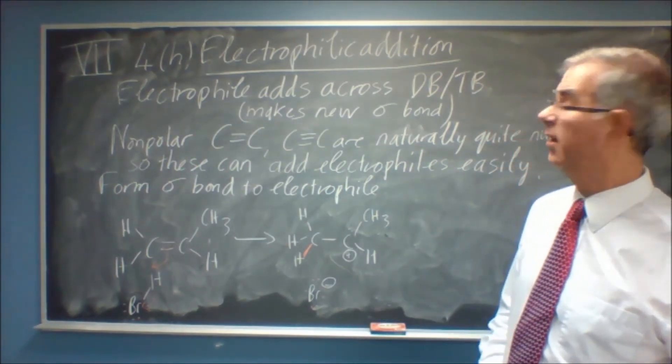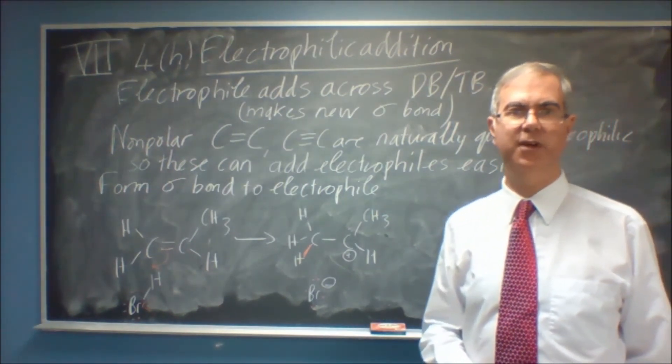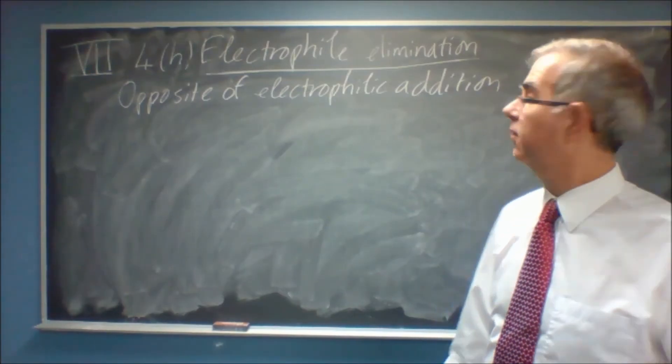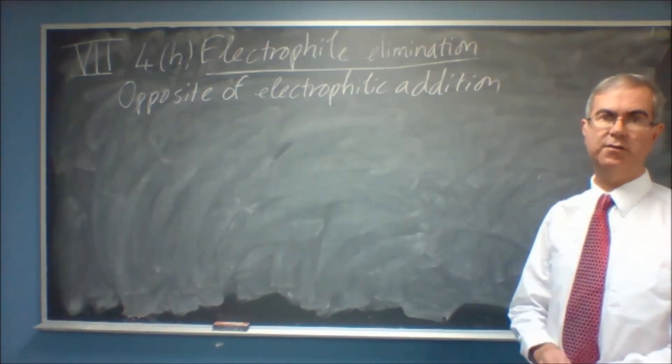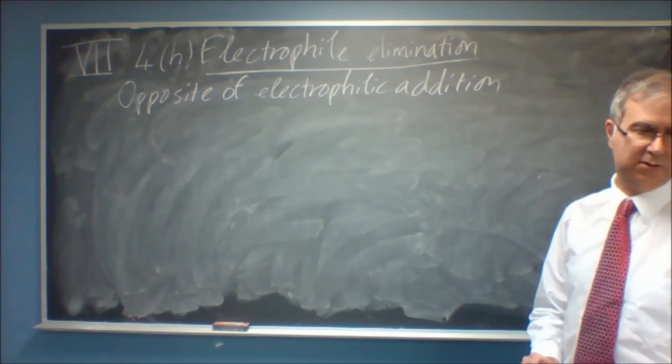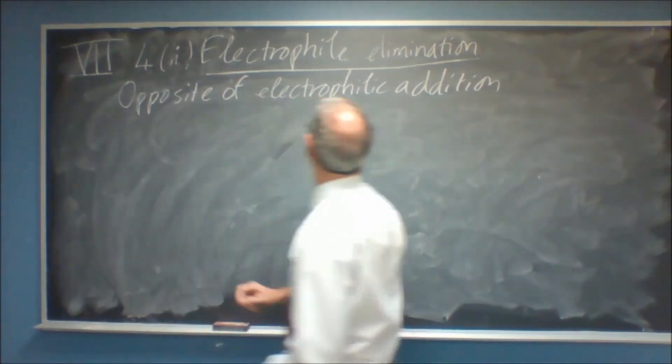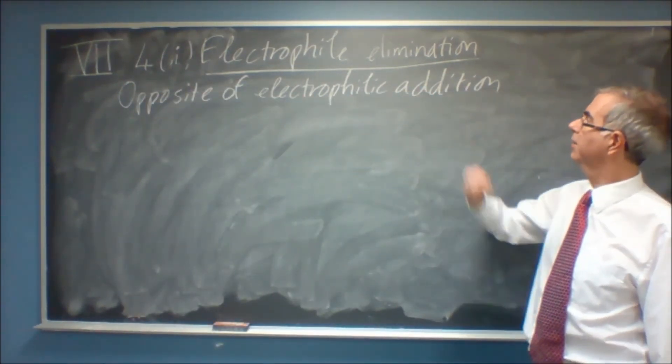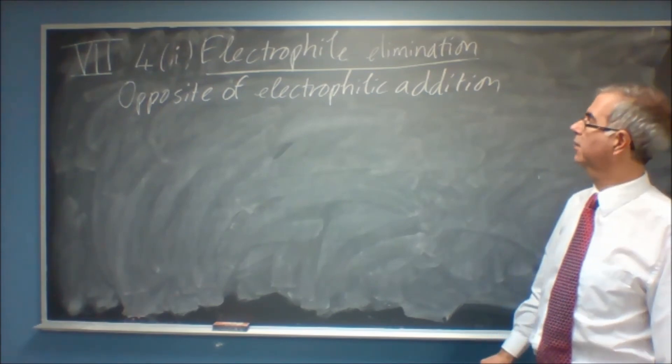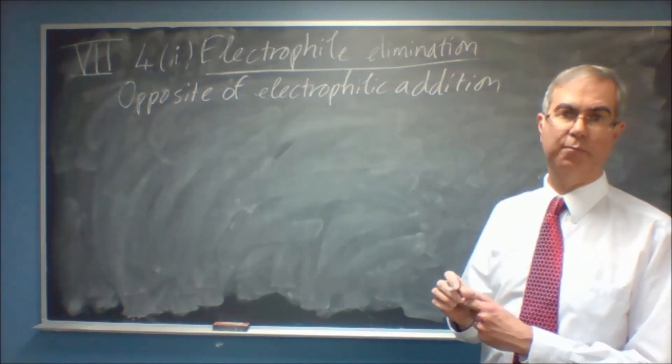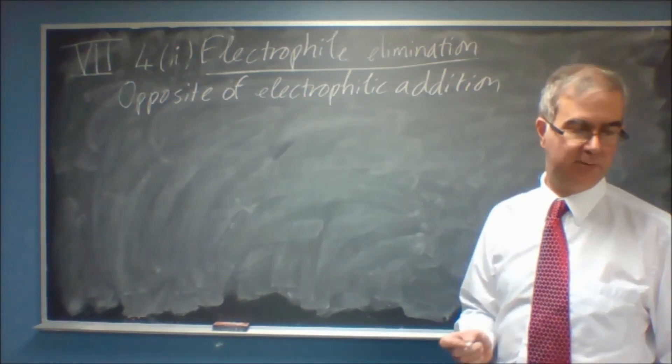Now the opposite process is, as you might imagine, electrophilic elimination, which I'll get to next. So the final one of these common elementary steps that we need to look at is electrophilic elimination. And, as I said, that's the opposite of electrophilic addition. So in this case, an electrophilic group is ejected, breaking a sigma bond to that, and we make a pi bond.